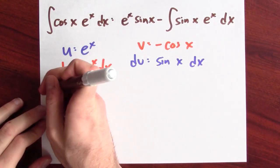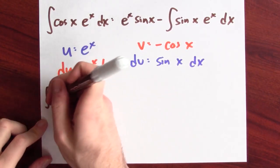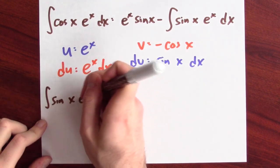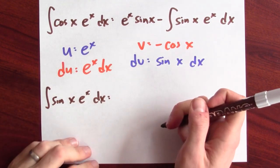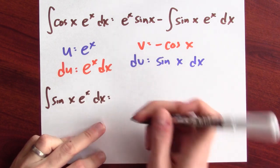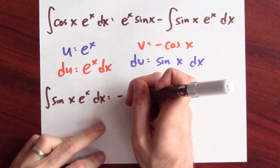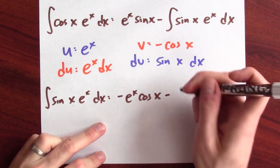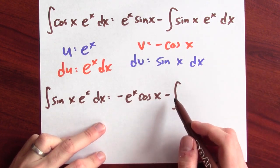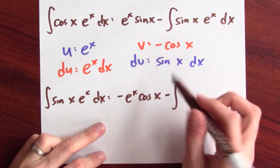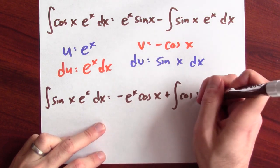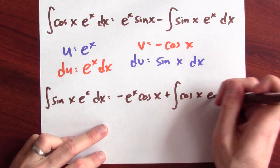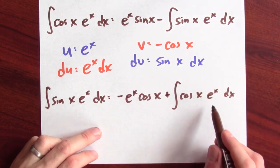Now, let's put this into the integration by parts formula. So, the anti-derivative of sine x e to the x dx is uv, so minus e to the x cosine x minus v du. So, the integral of v du. So, v is cosine x and du is e to the x dx.